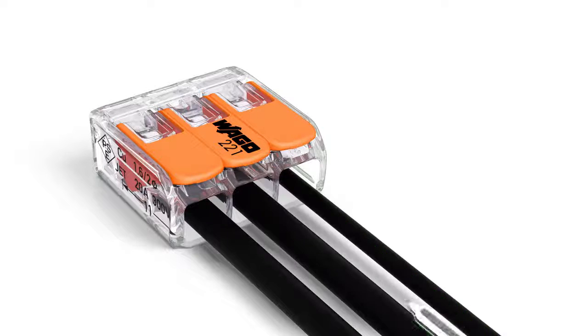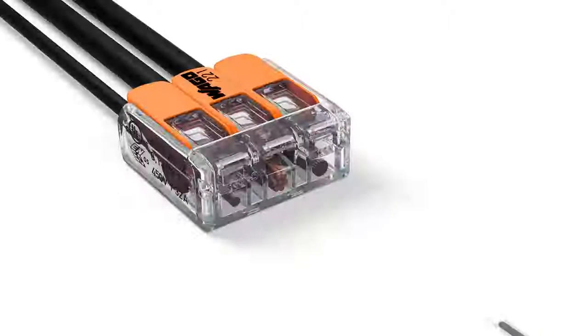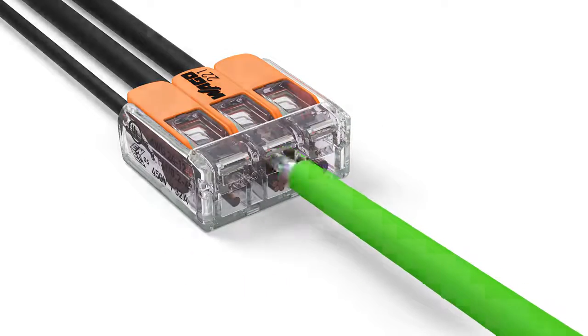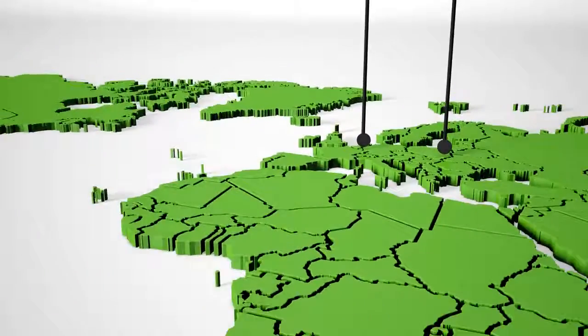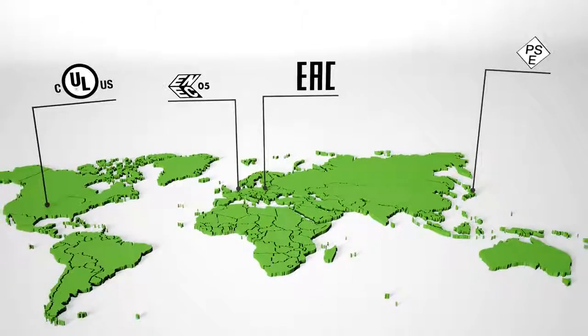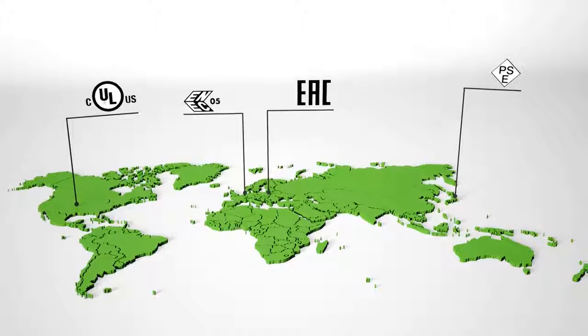Two easily accessible test slots, one in the conductor entry direction and one opposite this, provide easy test conditions, even when installed. The 221 series supports many diverse applications beyond building installations.